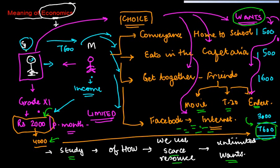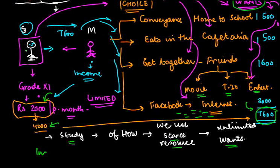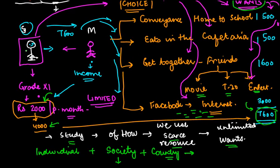So basically, economics tells us as to how an individual, in this present case, it could be even a complete society or it could even be a country. I mean, the same problem is faced by everyone. Let's say even at a country level.